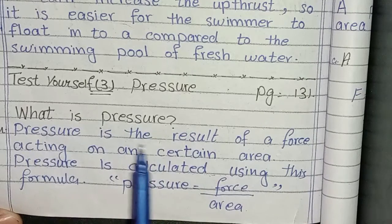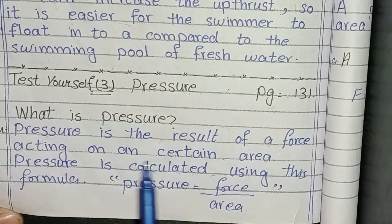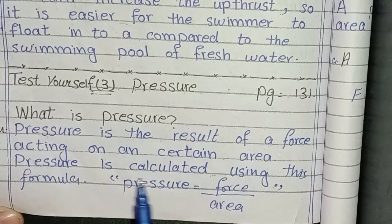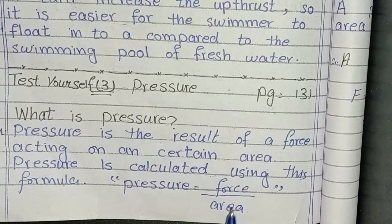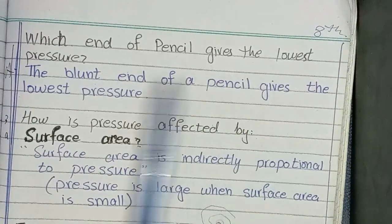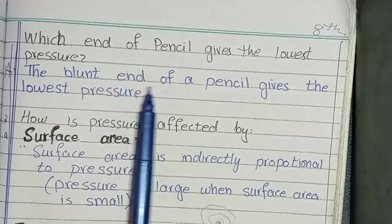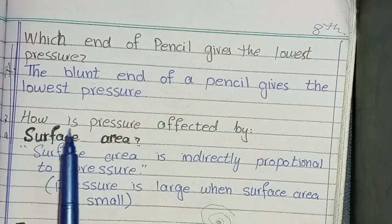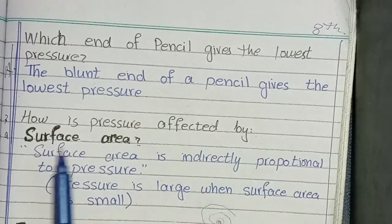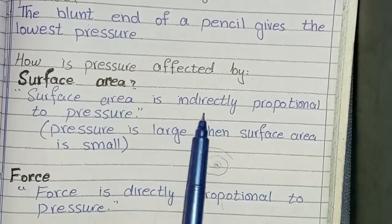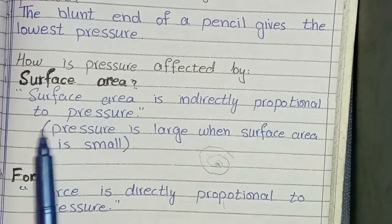Third Test Yourself, page 131. First question: What is pressure? Pressure is the result of a force acting on a certain area. Pressure is calculated using the formula: Pressure = Force ÷ Area. Which end of a pencil gives the lowest pressure? The blunt end of a pencil gives the lowest pressure.